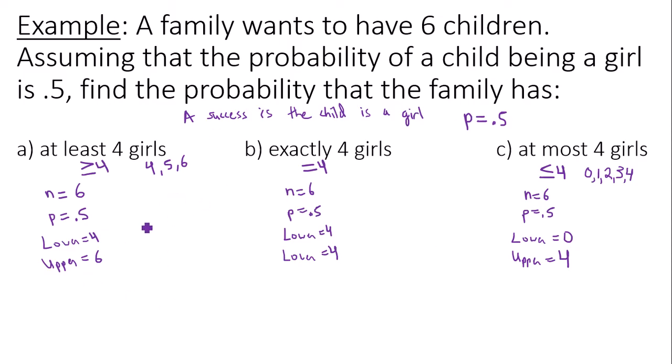So part A, your answer was 0.3438. Part B, your answer was 0.2344. And part C, your answer was 0.8906. So those are the probabilities for each of the parts in this question.